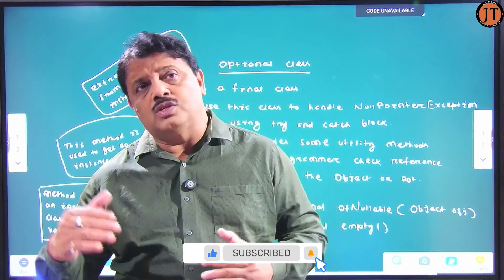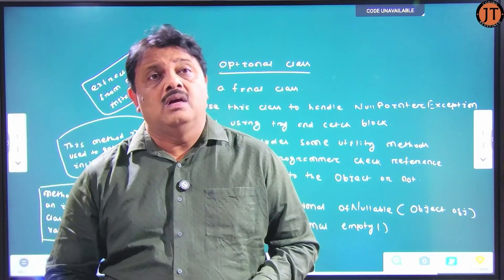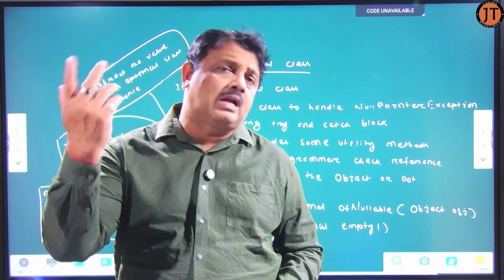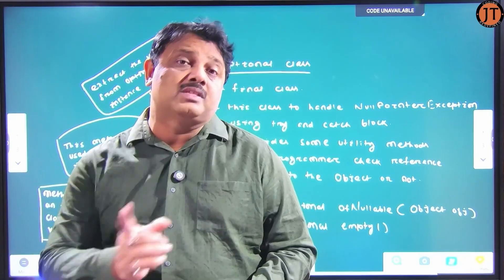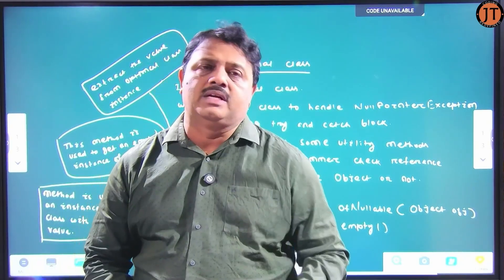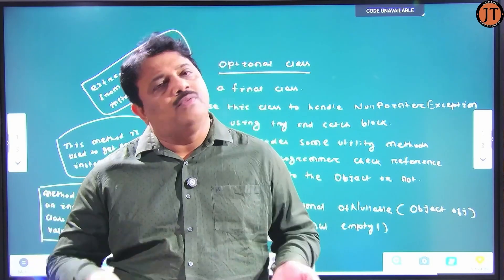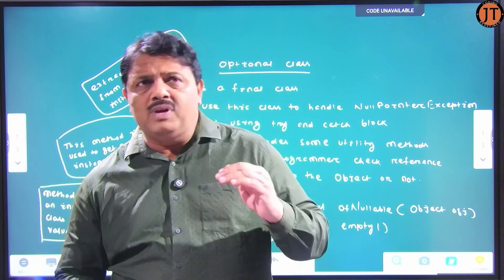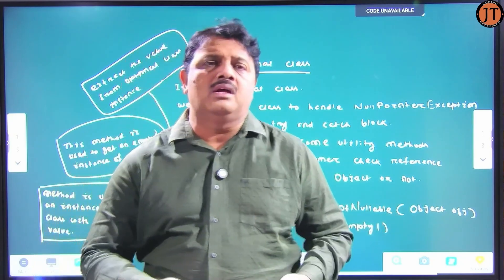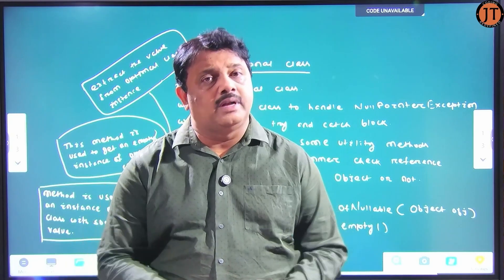If the reference is null and does not point to any object, and we want to extract a member of the class using that reference, the program must terminate by generating a NullPointerException. That is a genuine problem we face in Java. In traditional application development, we always use try-and-catch block to handle NullPointerException.